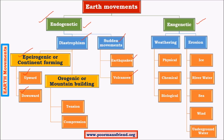Then there are orogenic or mountain-building movements. Two forces are involved: tension and compression. Tensile forces result in fracturing of the earth, whereas compressive forces result in folding. Orogenic movements mainly occur along plate margins — the boundaries of the plates — whereas epirogenic movements occur within the interior of the plate region.